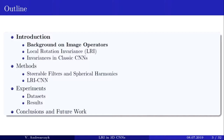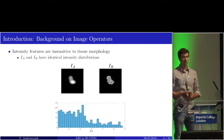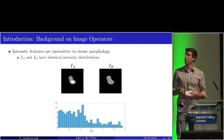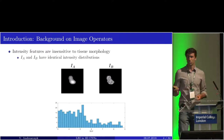Let's start with the background on image operators. Intensity features are insensitive to tissue morphology. We have two example images that have the same distribution, although one image has very smooth texture and the other one is very coarse. So we need other measures of local transitions between pixels — local patterns — to discriminate these two images.